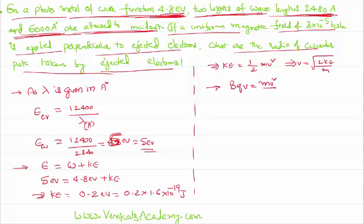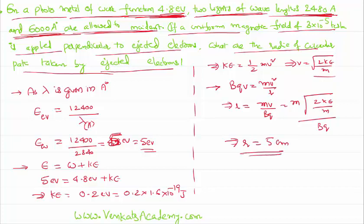As centripetal force mv square by r, that implies radius of the circular path is mv by Bq, which equals root of 2 into kinetic energy into mass by Bq. Substituting all these values we can get the radius as 5 centimeter. So in the first case, electron experiences circular path of radius 5 centimeter.